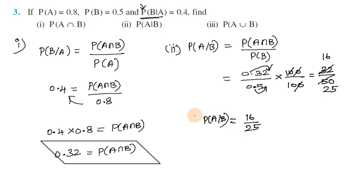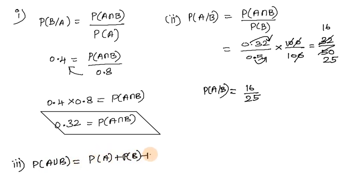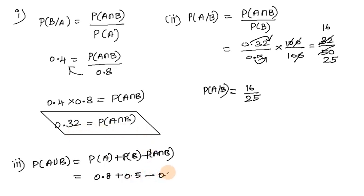Third subdivision: Find P(A∪B). The formula is P(A∪B) = P(A) + P(B) − P(A∩B). Substituting: P(A) = 0.8, P(B) = 0.5, P(A∩B) = 0.32.